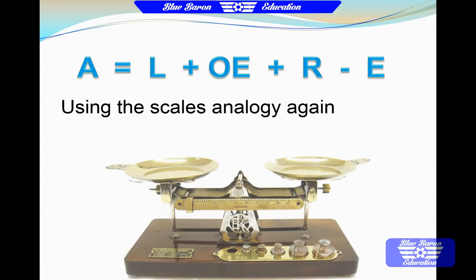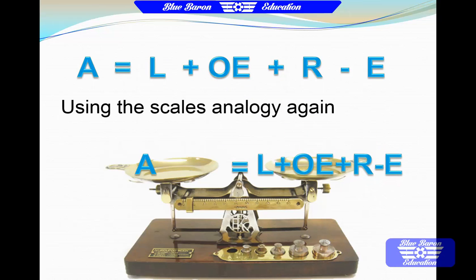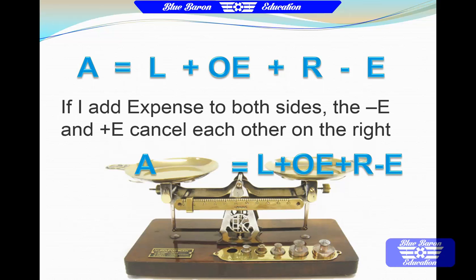Returning to the scale analogy again, we can now get this to balance. Assets equals our liabilities plus our owner's equity plus our revenue less our expenses. We can add expenses to both sides, so now we have an equation that looks like: assets plus our expenses equals our liabilities plus our owner's equity plus our revenue.